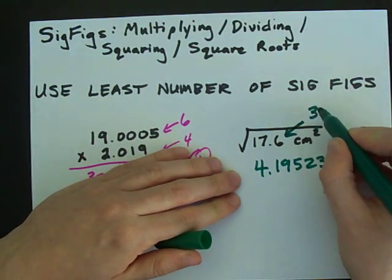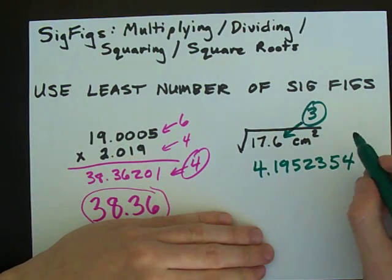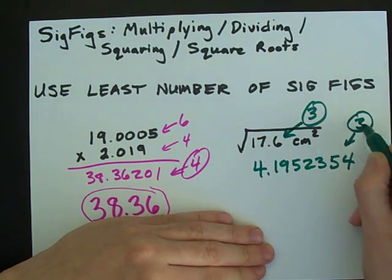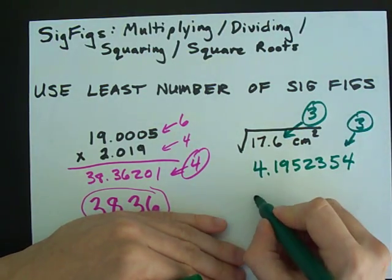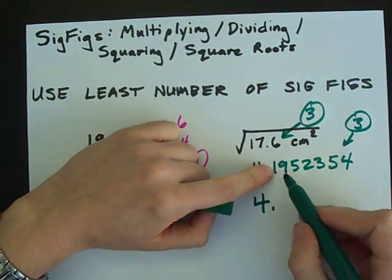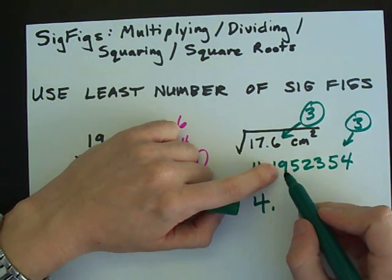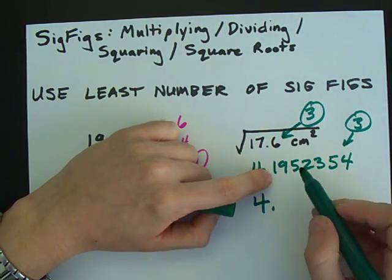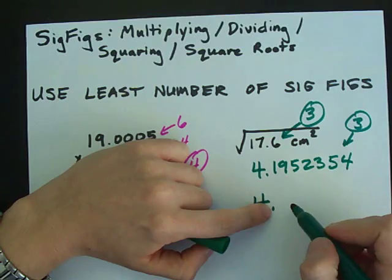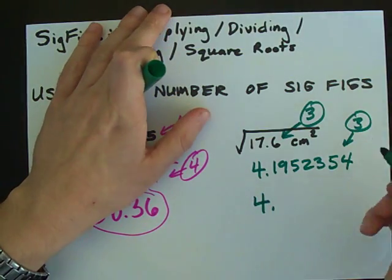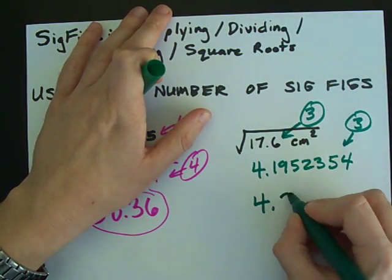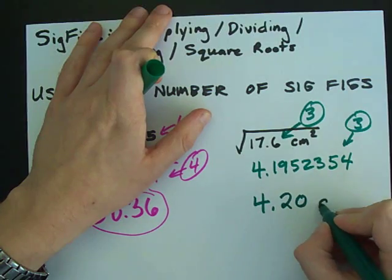This has three significant digits, so your answer is only allowed to have three. 4 point—now I've got to round this number, point 195. So there's only two numbers after the decimal place because I need three. I gotta round this up to 4.20